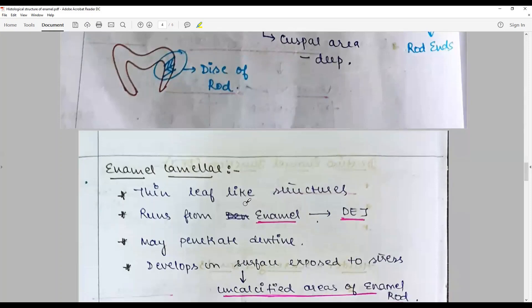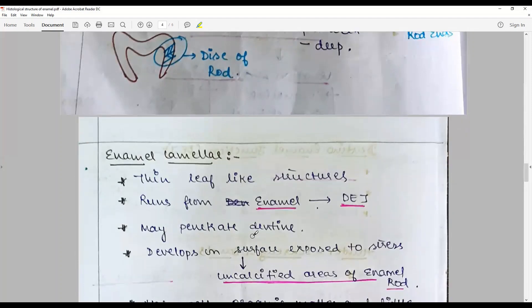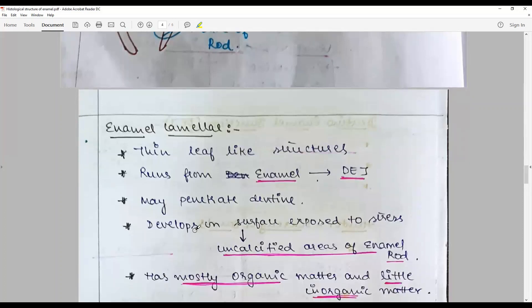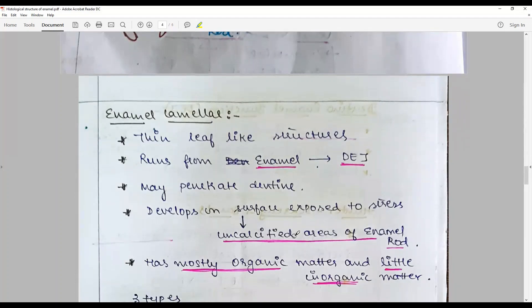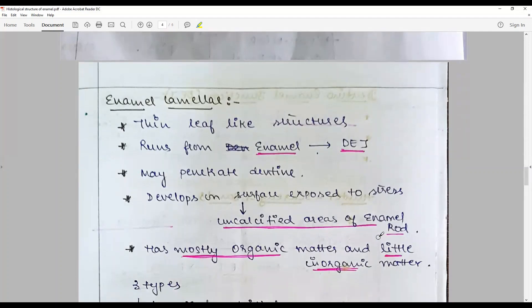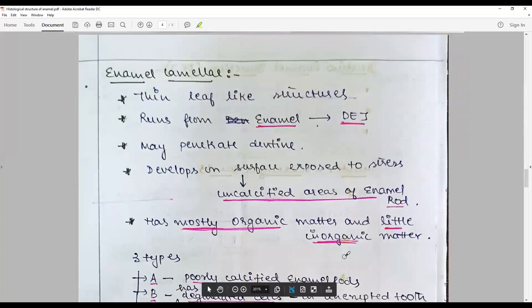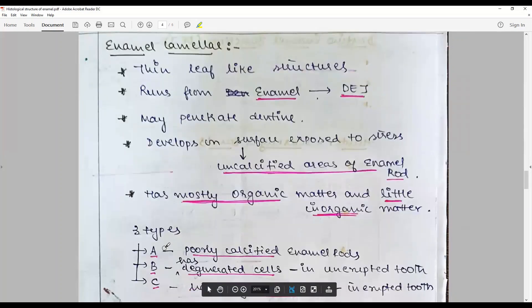Enamel lamellae - they are thin leaf-like structures that run from enamel to the dentino-enamel junction, from the periphery enamel surface to the dentino-enamel junction, may rarely penetrate dentin. They are developing in the areas of surfaces exposed to high occlusal structure and often uncalcified areas of enamel rods. They have mostly organic matter and little inorganic matter comparatively to the 96:4 of regular enamel. So it will be somewhere in the 92 to 93 range.